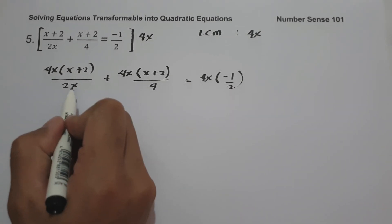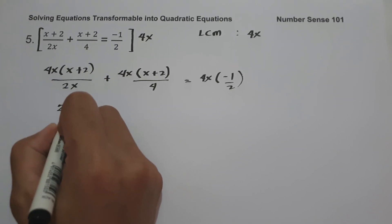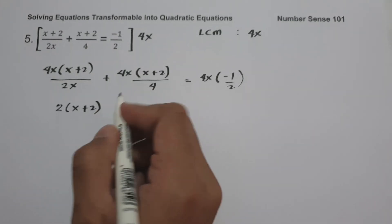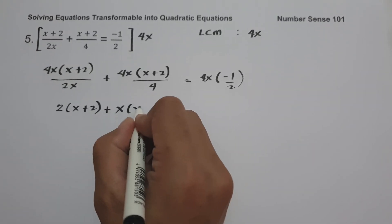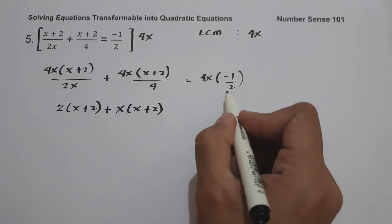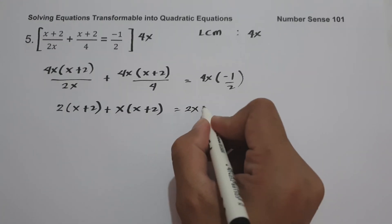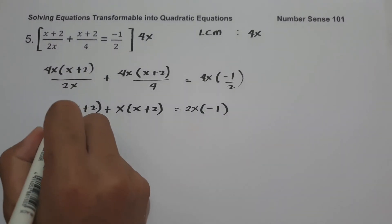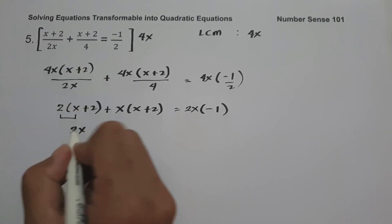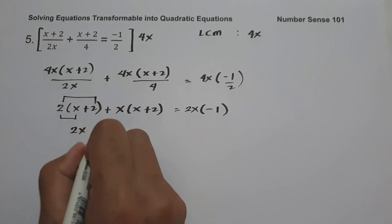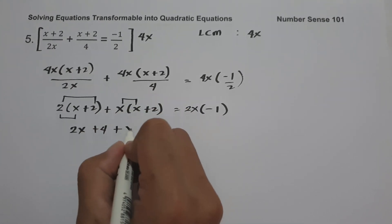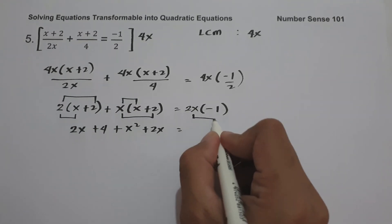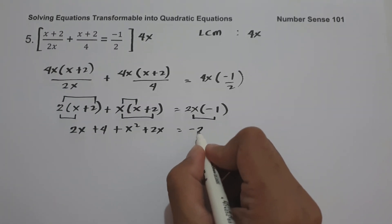Simplifying: 4x divided by 2x is 2, so we have 2 times (x plus 2); 4x divided by 4 is x, so we have x times (x plus 2); and 4x divided by 2 is 2x times negative 1. Expanding: 2(x+2) gives 2x plus 4; x(x+2) gives x squared plus 2x; and 2x times negative 1 gives negative 2x.